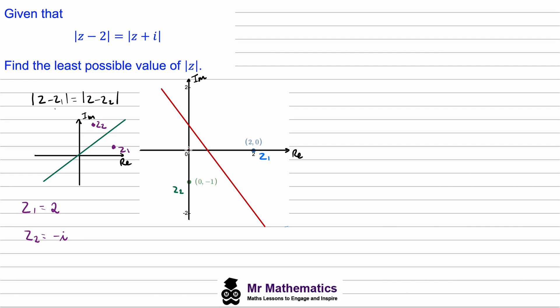It must originate from the origin, so the least possible magnitude will be a line from the origin that intersects the red line at 90 degrees, which is the length we're trying to find.